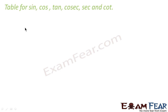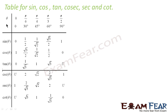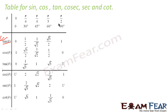Let's look at the table for sin, cos, tan, cosec, sec, and cot. The angles are 0°, 30°, 45°, 60°, and 90°. For sine: sin 0° = 0, sin 30° = 1/2, sin 45° = 1/√2, sin 60° = √3/2, sin 90° = 1. Knowing these five values is more than enough for most questions. For other angles like sin 35°, sin 55°, we can use a sine table.